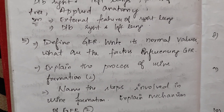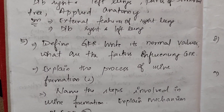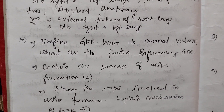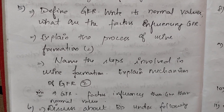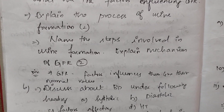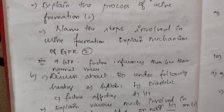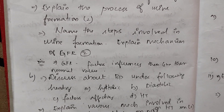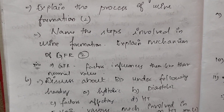Next, describe the GFR — glomerular filtration rate. Define GFR, write its normal values, and state the factors influencing GFR. Explain the process of urine formation — 2 times. Name the steps involved in urine formation, explain the mechanism of GFR — 2 times. For 5 marks: describe the GFR, factors influencing it, and give their normal values.